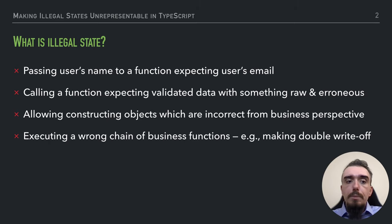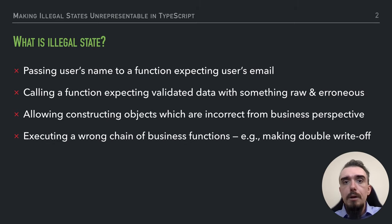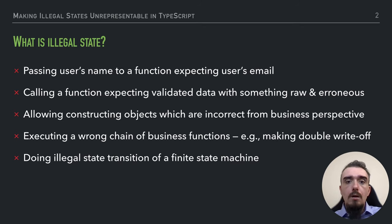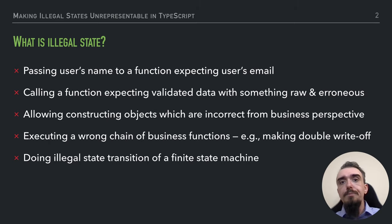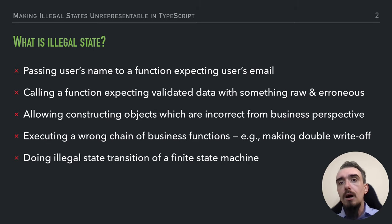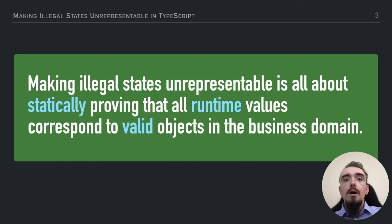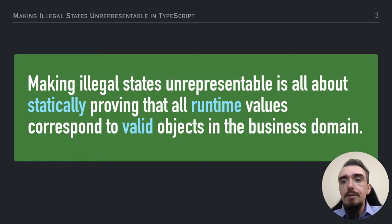Another example would be executing an incorrect chain of functions — for example, in a financial domain causing a double write-off. And in general, making illegal state transitions of a finite state machine. For those developers who are familiar with React and Redux, you may imagine dispatching an action from the application state which shouldn't allow doing this dispatch. So, to state what is the making illegal states unrepresentable approach, I should say that it's all about statically proving that all runtime values correspond to valid objects in the business domain.